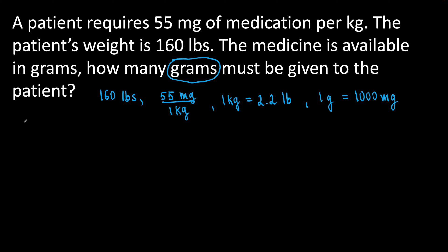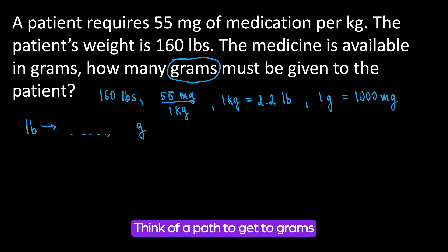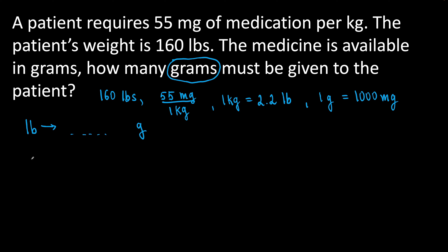What we need to do is change pounds to grams. This is going to be our path. Let's see how we will get there. Write what we have as a fraction: we have 160 pounds. Write it over 1 and prepare to multiply.